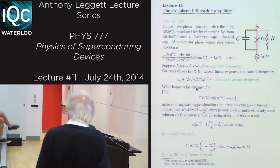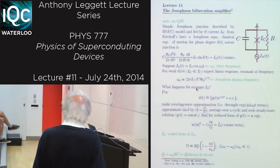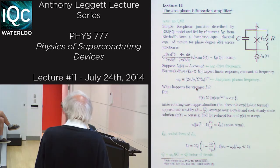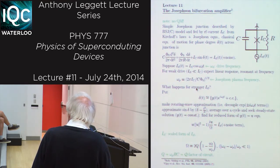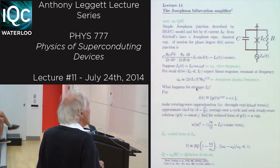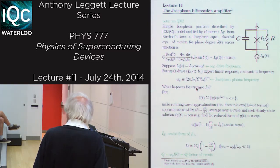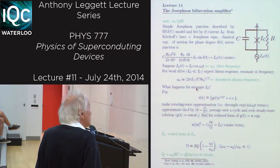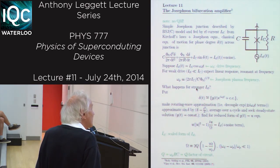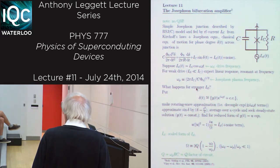For a weak drive — where the magnitude of the RF drive is small compared to the critical current — in the washboard potential model, you're driving with small amplitude relative to the scale of the potential. You would expect some kind of linear response, and indeed you do. That linear response is resonant at the standard Josephson plasma frequency. The question is what happens for stronger values of I_RF.